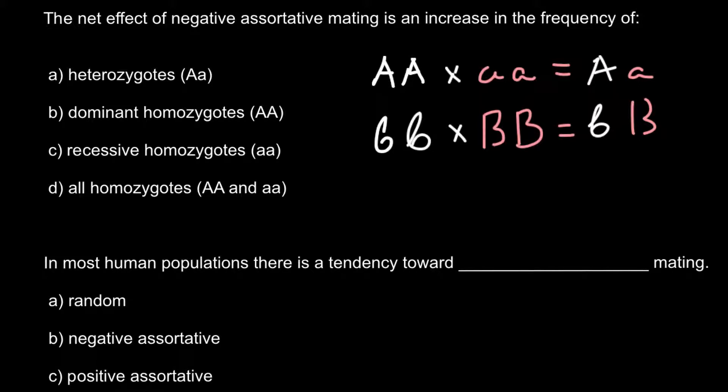And here is the example. So this can be a person from one group, and this can be a person from another group, and this is going to be negative assortative mating.